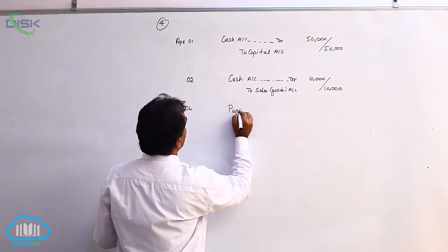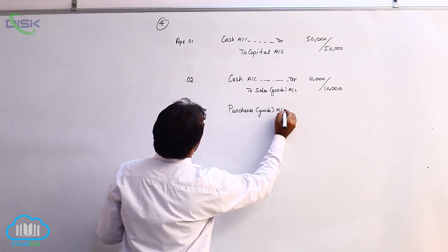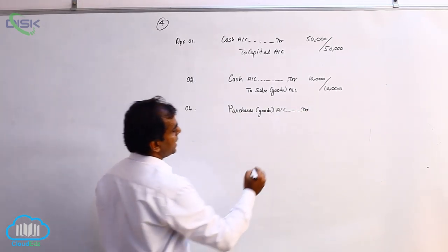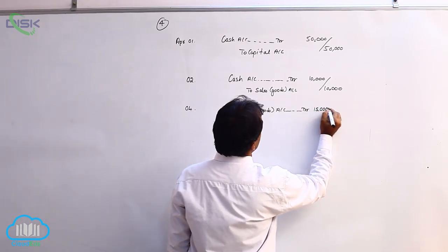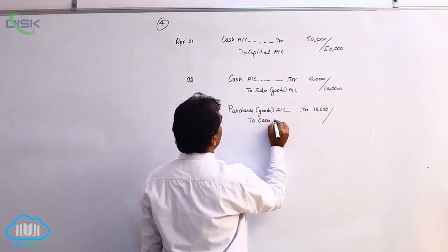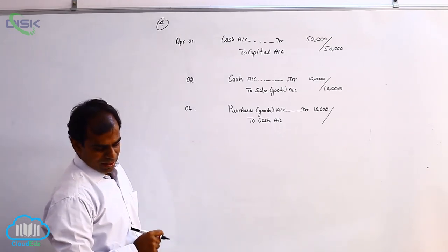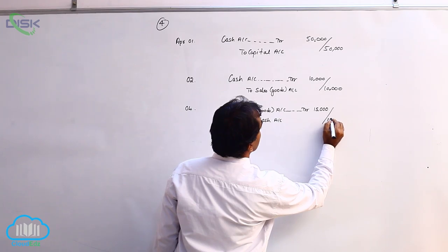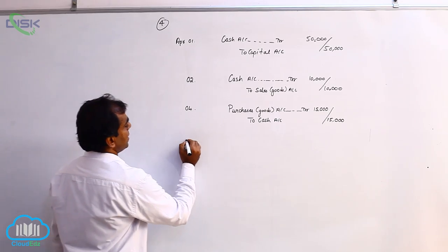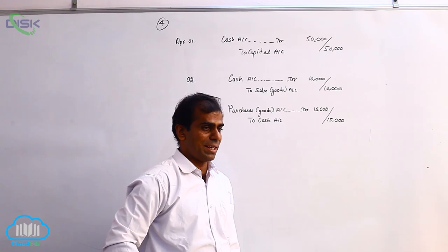On the fourth, there is a purchase of goods for cash. When goods are purchased for cash, we are getting goods which are a real account — they are coming in, so we debit purchases account for 15,000. When buying goods, we naturally pay cash. Cash is a real account going out, so applying the rule credit what goes out, we credit cash. The journal entry: purchases account debit to cash.